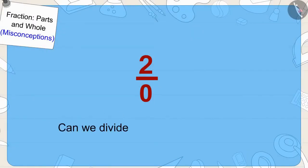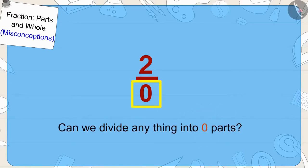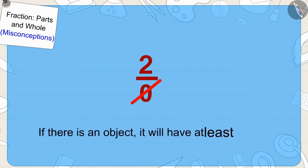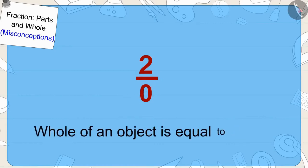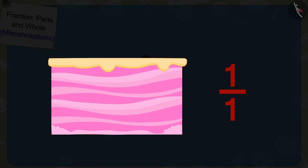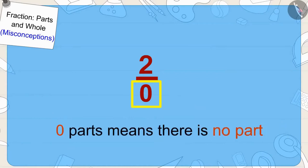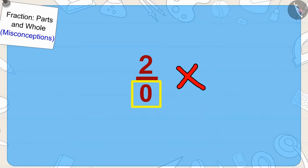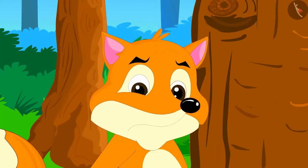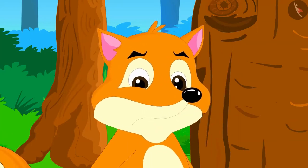Children, can we divide anything into zero parts? No, if there is an object, it will have at least one part. Because the whole of an object is equal to one part. Like, if we have this cake, we can write it as one upon one — this whole cake is one part and we are taking that whole portion. And zero parts means there is no part. So when there is no part, how can we take two parts from it? The fox finally had to pay for her cunningness.